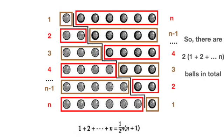we have n, n-1, n-2 balls in that order until we reach 1 ball on the nth row. We see that adding up the balls, we get 2 times 1 plus 2 plus 3 up until plus n.